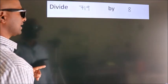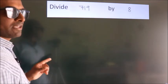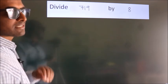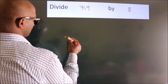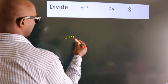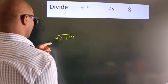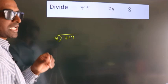Divide 719 by 8. To do this division, we should frame it in this way. 719 here, 8 here. This is your step 1.